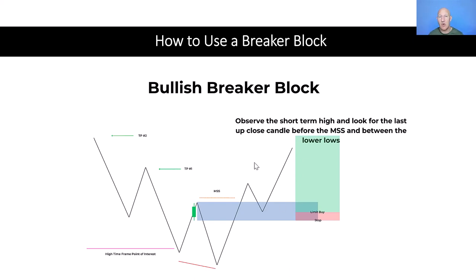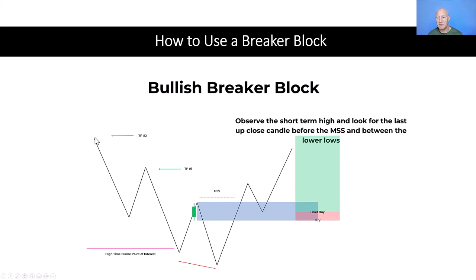And as always, we're making sure we pay the trader. So we'd be looking for our first take profit, looking at any structures that make sense. You can see in this diagram we have a swing high here, so that would be a good place to look for our first take profit. And for our final take profit or terminus, we'd be looking at where that price move originated from as our final target.